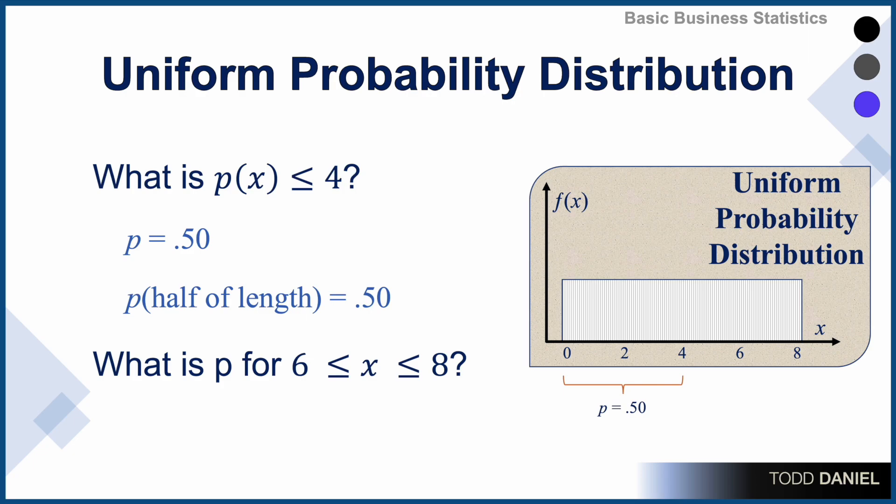What is the probability between six and eight minutes? Well, six to eight is one-quarter of that distribution. Therefore, the probability of a wait time between six and eight minutes is .25.